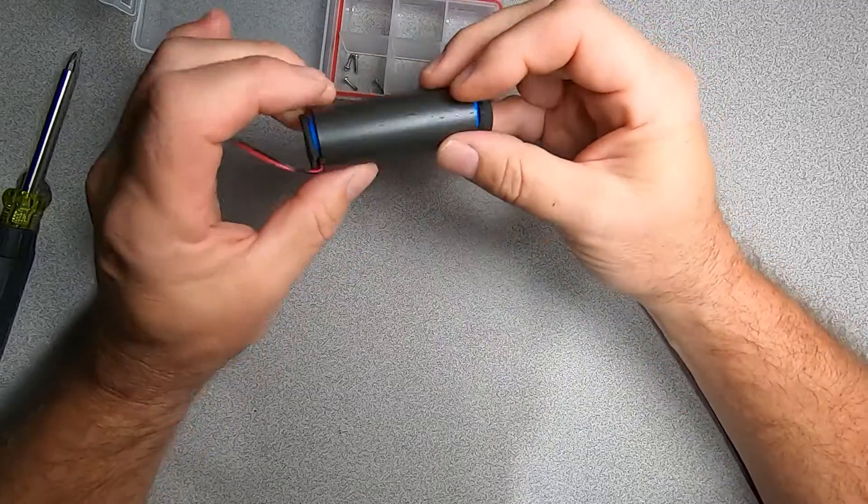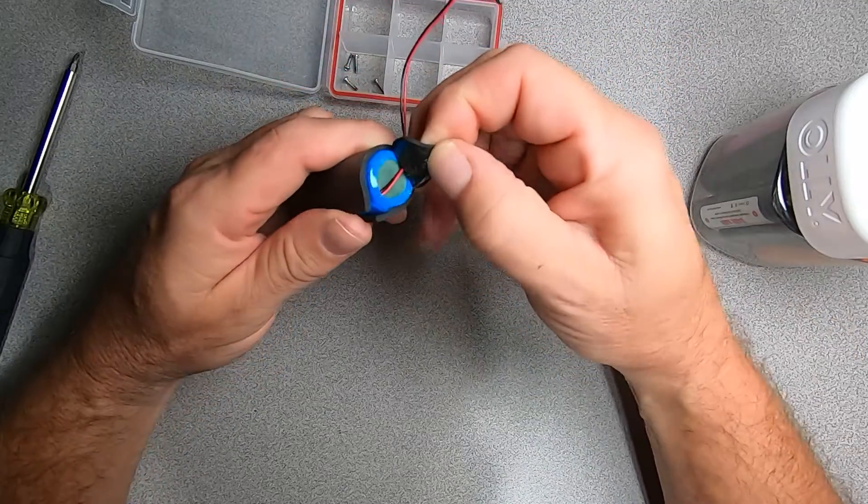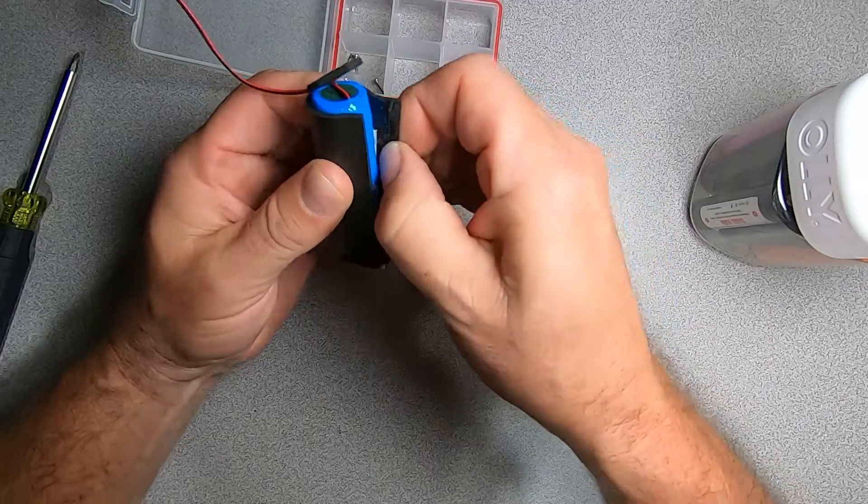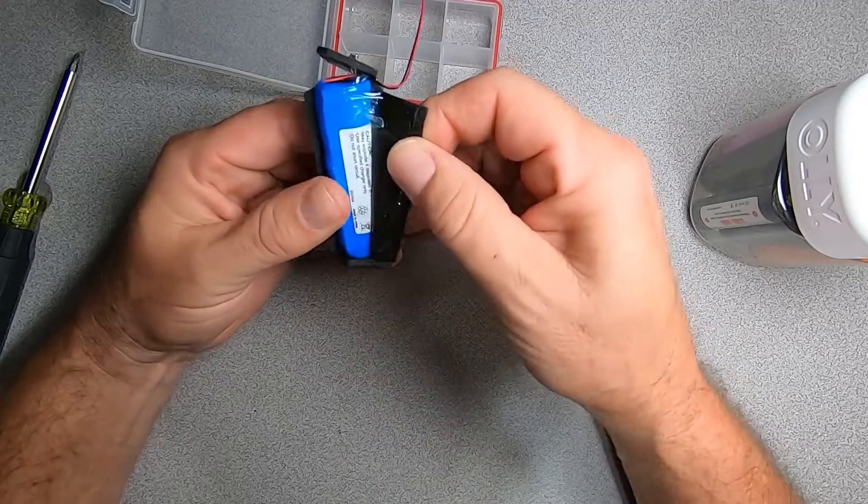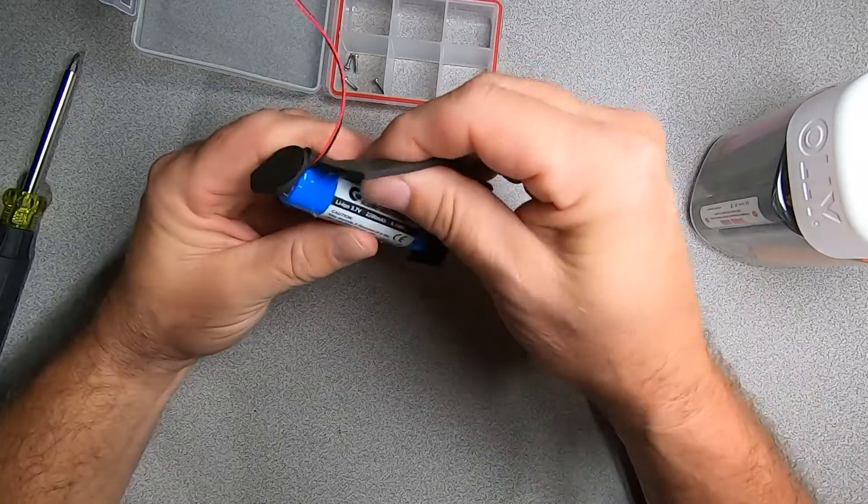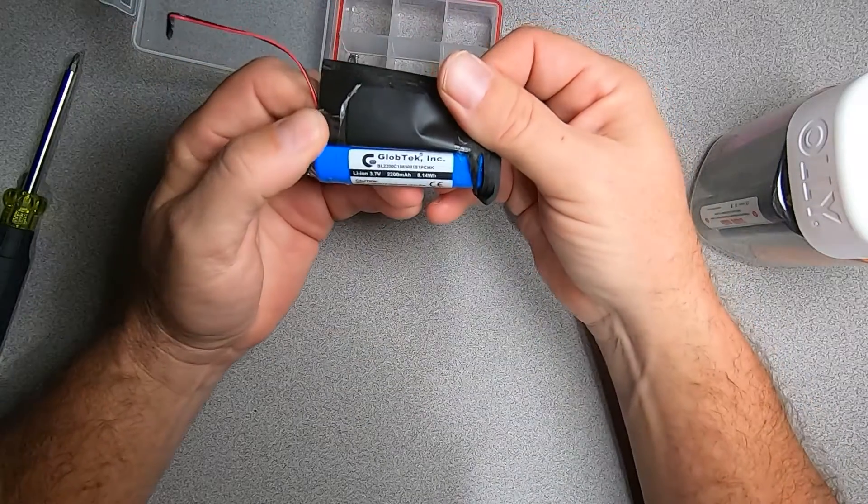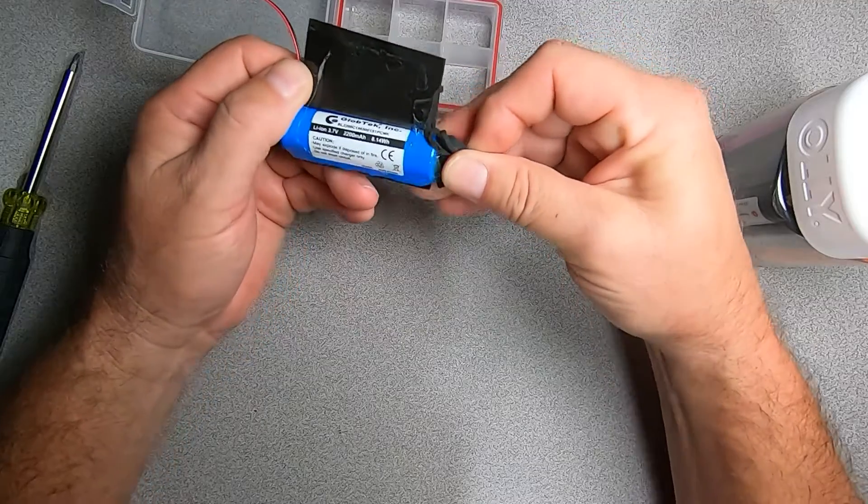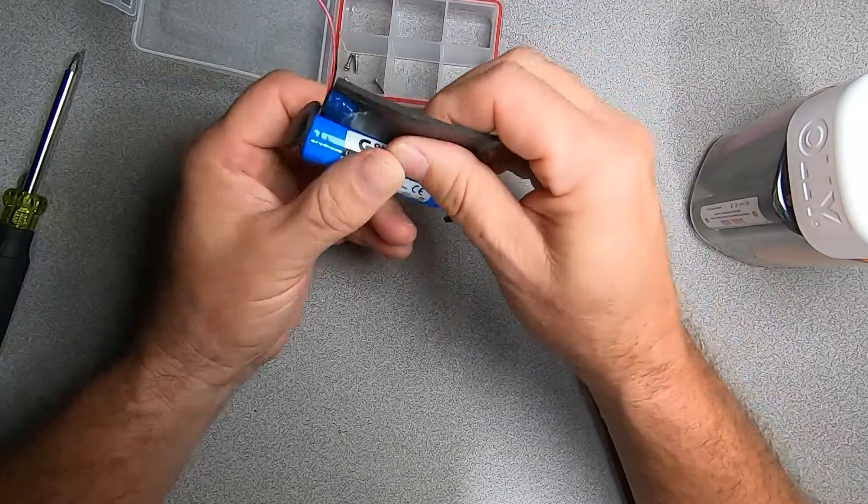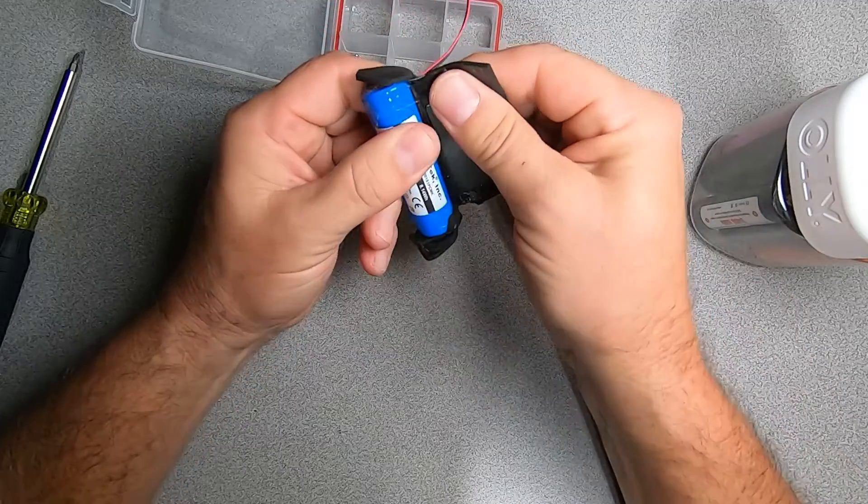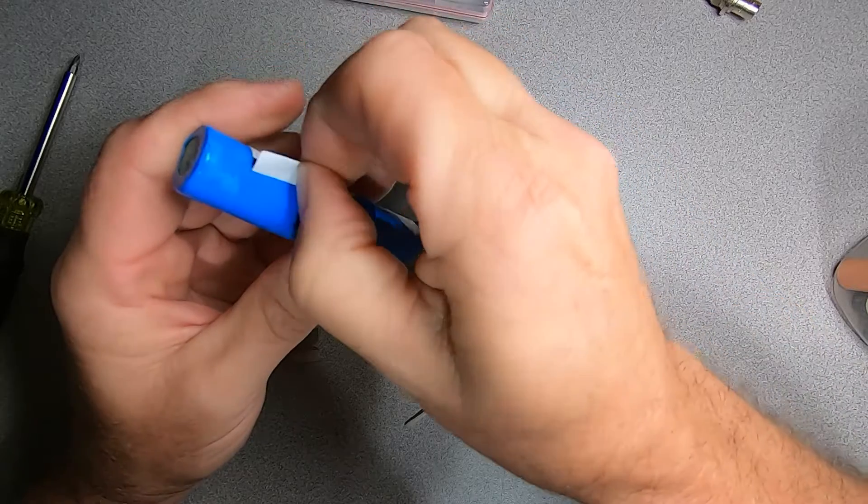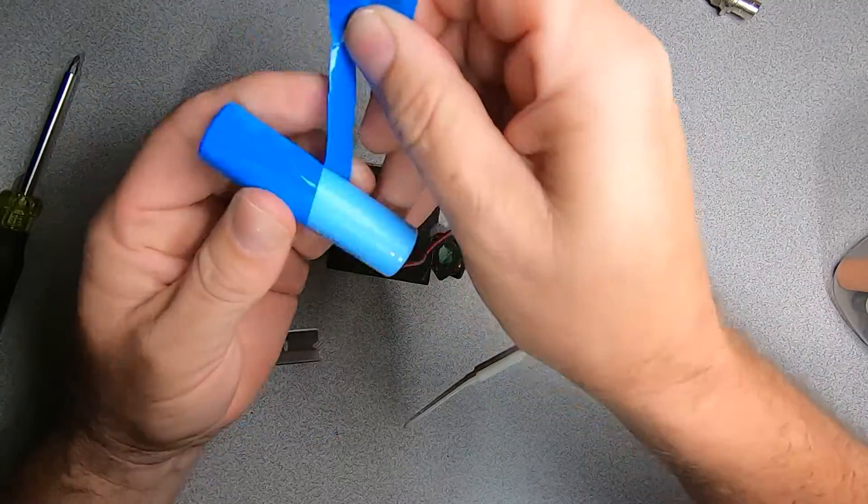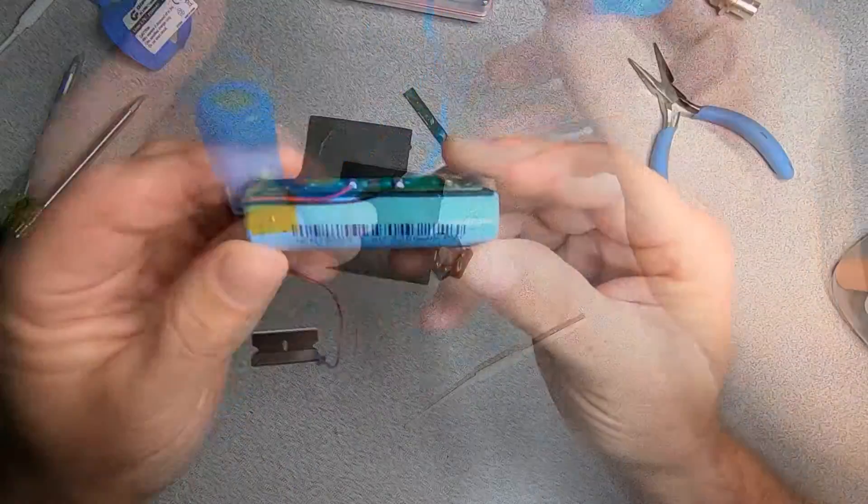Let's check out our battery here and see what it is. Looks like it's an 18650 size battery. Let's go ahead and get this tape off of it. Globtec Incorporated, 2200 milliamp hour, 3.7 volt battery. Let me peel away our shrink wrap here and see what we got.